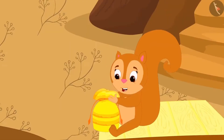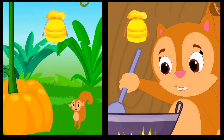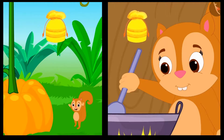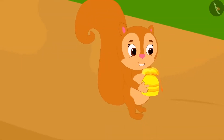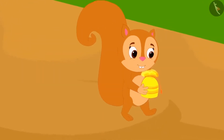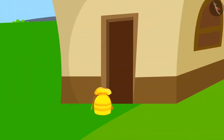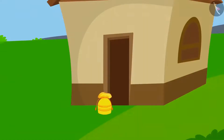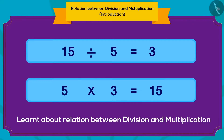Just when Chanda was about to open the third pouch, she remembered the happiness she felt from the first two pouches and decided to give this pouch to her friend Babban to make him happy. She quietly left the pouch outside Babban's door. In this video, we learned about the relation between division and multiplication. In the next video, we will bring some interesting examples related to this.